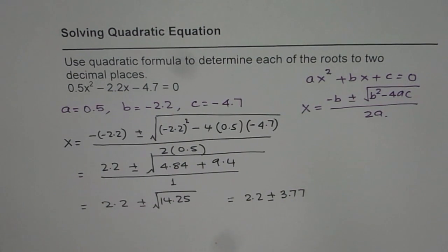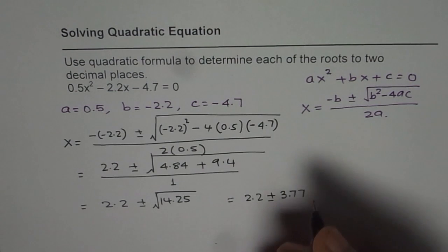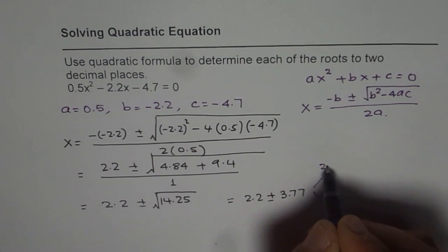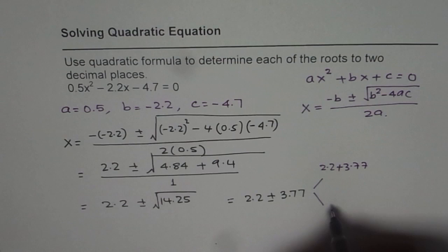Since we are interested in two decimal places, we get two different answers. We can add and then subtract. So first is 2.2 + 3.77, the other one will be 2.2 - 3.77.